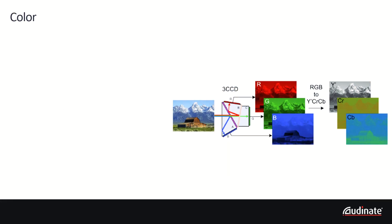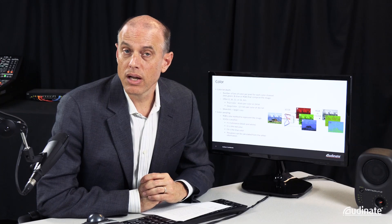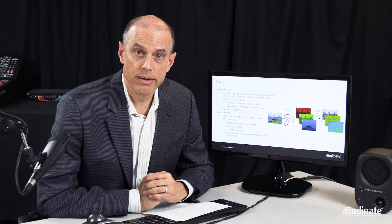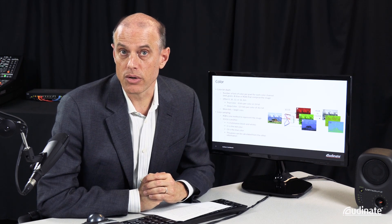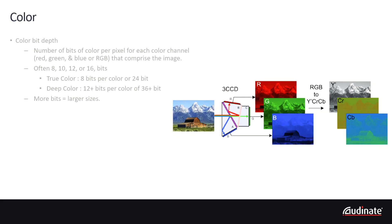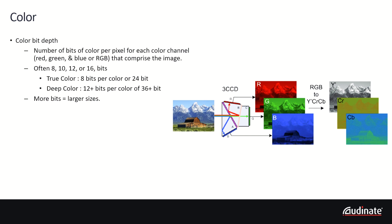Next up we'll discuss color. Normally color is represented by three color channels — red, green, and blue — or more commonly referred to as RGB. The color depth is the number of bits used to store color information for each color channel for every pixel. Color depth can range from 8 bits per pixel, called true color, to 10, 12, and even 16 bits per color.